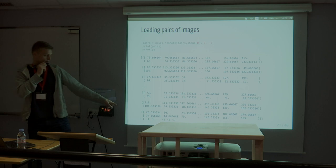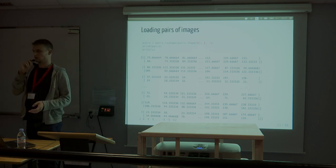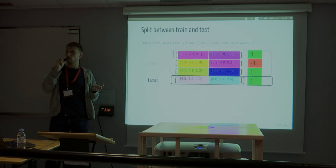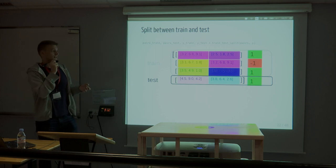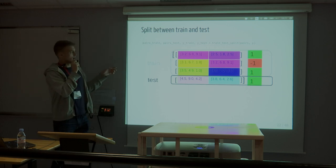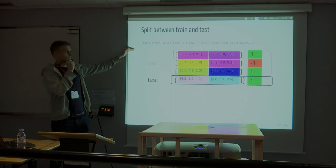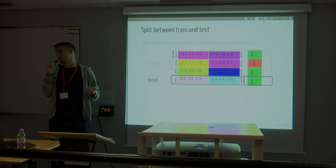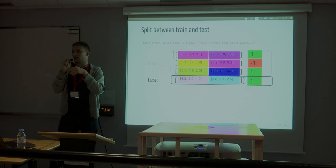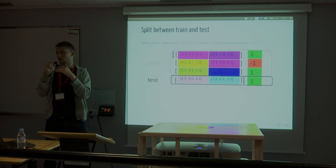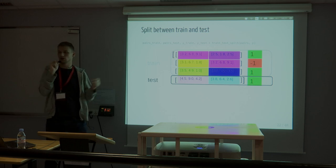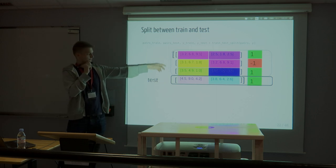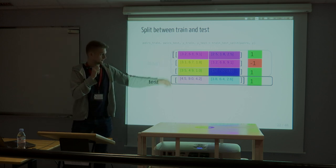As before with scikit-learn, we have to split the dataset between train and test set. We can use the scikit-learn train_test_split function here because it only looks at the first dimension — it will just slice the input along the first dimension. So the splits are still valid input data.